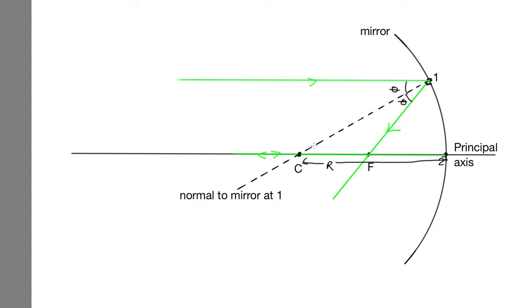Now, another angle which is theta is this angle in here. And that's because this incoming ray is parallel to the principal axis. So this line and this line are parallel. And these two angles are then alternate angles on parallel lines. So those two are equal.